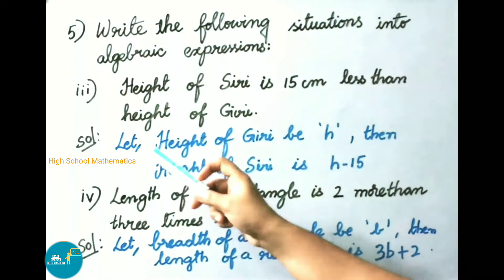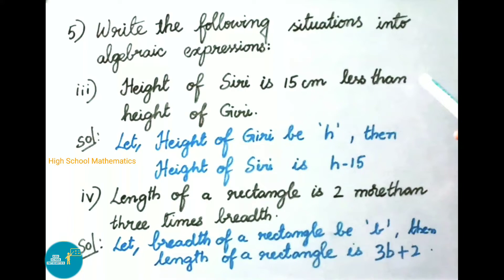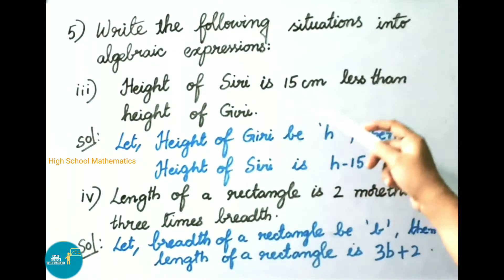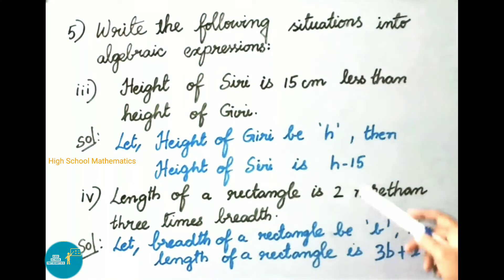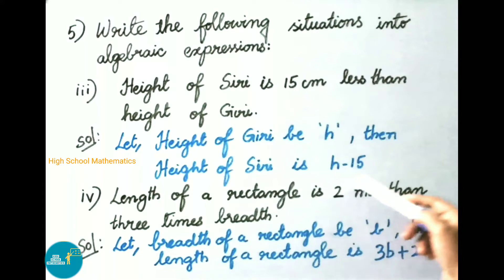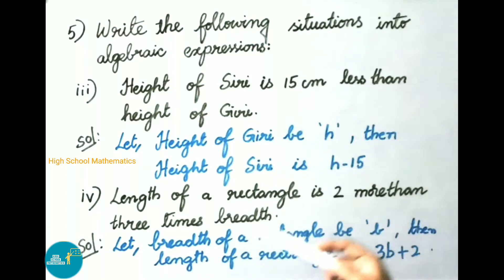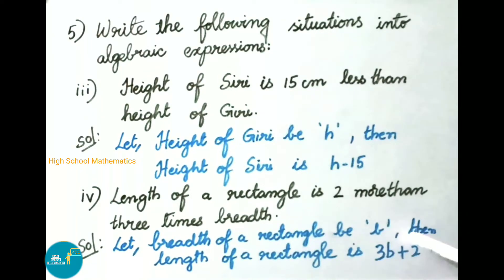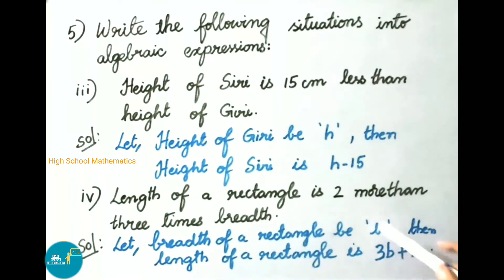Third, 'height of Siri is 15 cm less than height of Giri' — let height of Giri be h, then height of Siri is h minus 15. Fourth, 'length of a rectangle is two more than three times its breadth' — let breadth be b, then length is 3b plus 2.